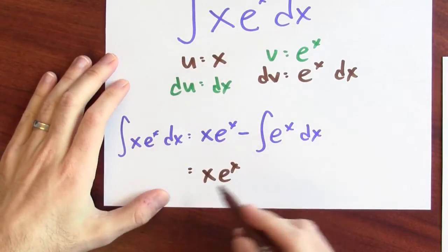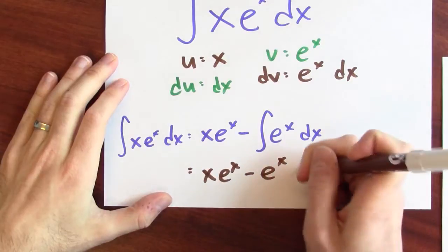So, the anti-derivative of xe to the x is xe to the x minus e to the x plus some constant. We did it!